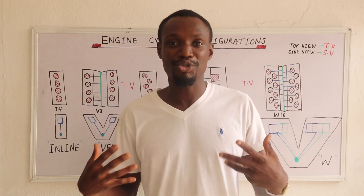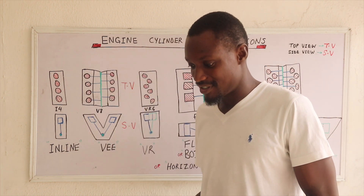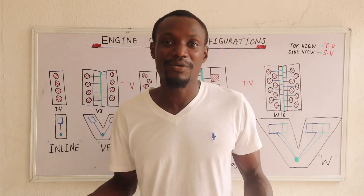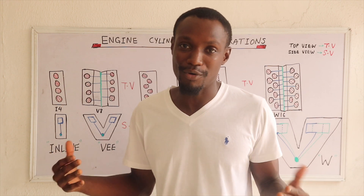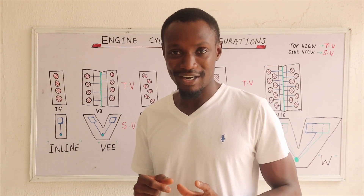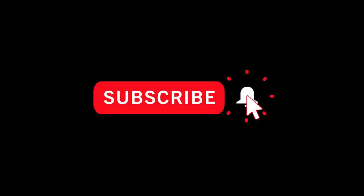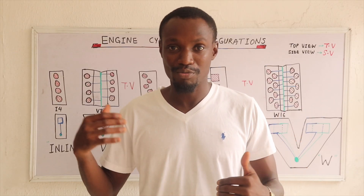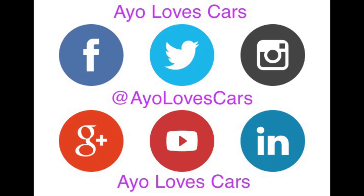Quick recap: inline engines have cylinders arranged in a straight line; V engines have two separate banks sharing one crankshaft; VR combines inline and V principles into one bank with increased displacement; the flat/boxer engine is horizontally opposed at 180 degrees; and two VRs come together to form a W. Now when someone asks if your car has a V6 or an inline 4, you'll know the difference — and you won't say your engine is a V4. Thank you for tuning in. Please subscribe, hit the notification bell, and follow us on Instagram, Twitter, and all our social media platforms.